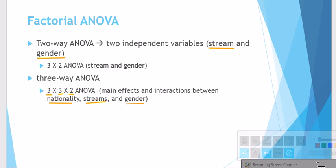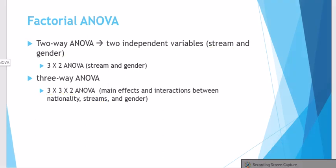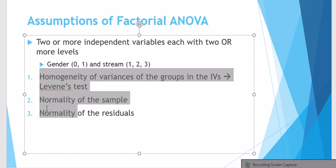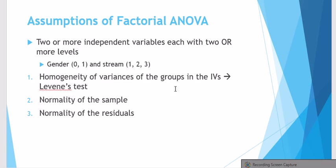What are the assumptions of factorial ANOVA? Well, there are four assumptions, three of which you need to report in your papers. The first assumption is that two or more independent variables should be included in your analysis, each with at least two or more levels, like gender and stream.